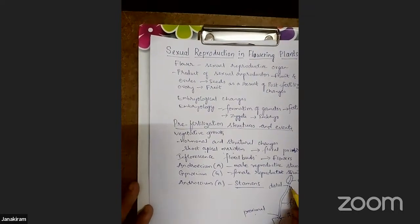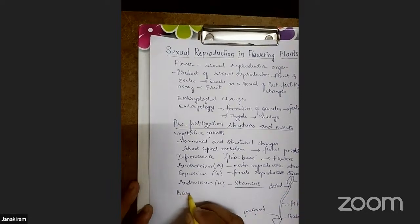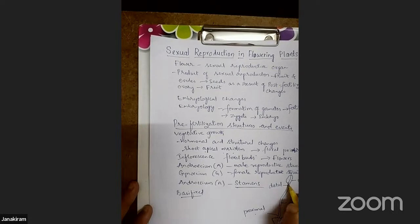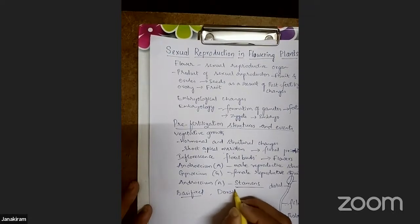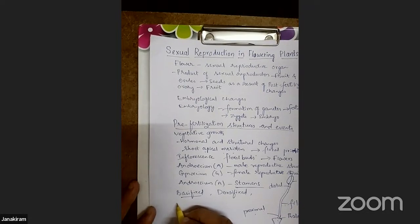Depending upon the attachment patterns, sometimes the filament is attached to the basal side of the anther — we call it basifixed. Sometimes the attachment may be on the dorsal side — called dorsifixed. So different types of attachment patterns can be seen in the anther.